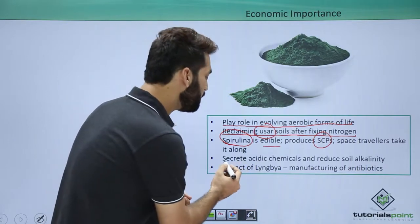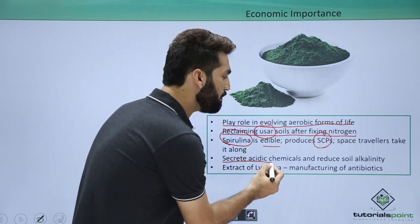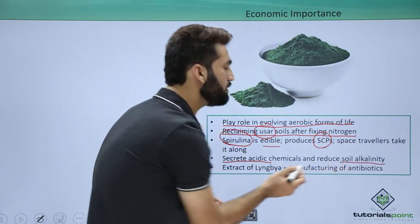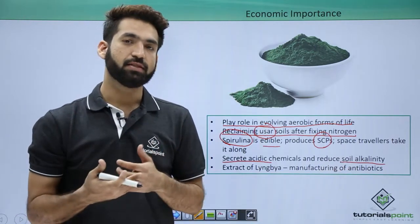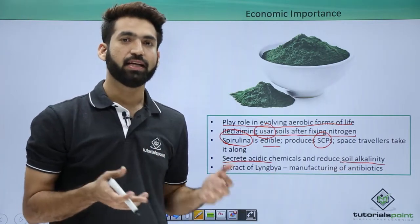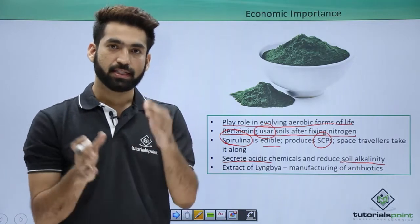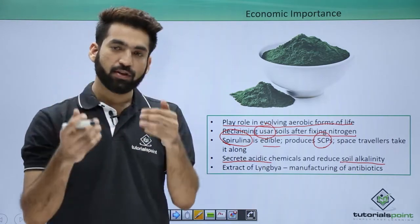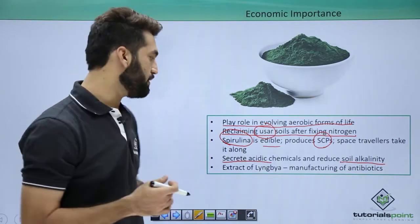Cyanobacteria also secrete acidic chemicals that reduce the alkalinity of the soil. If the soil is highly alkaline, cyanobacteria secrete acidic substances which neutralize and decrease that alkalinity.